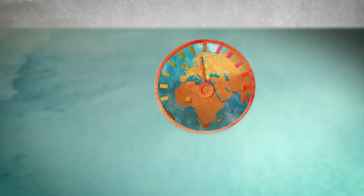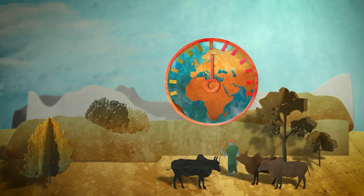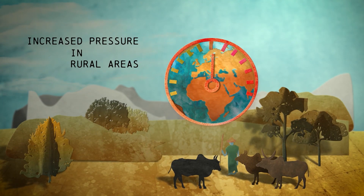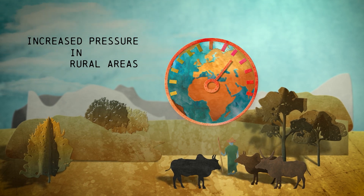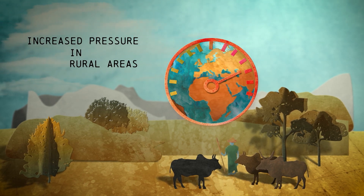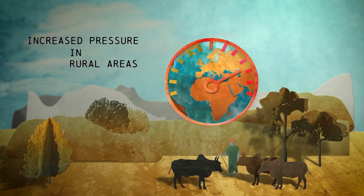For example, in rural areas, many people are heavily dependent on natural resources and face significant challenges as environmental change increases pressure on their livelihood.